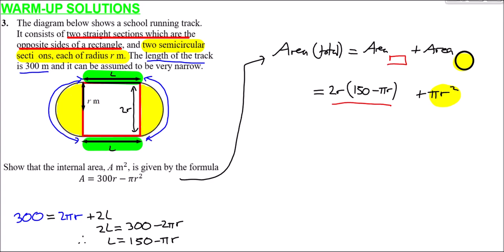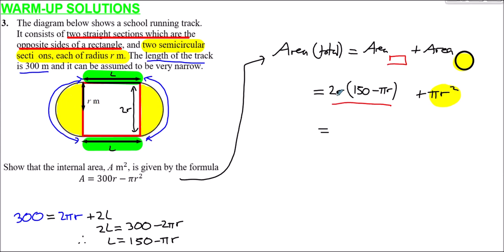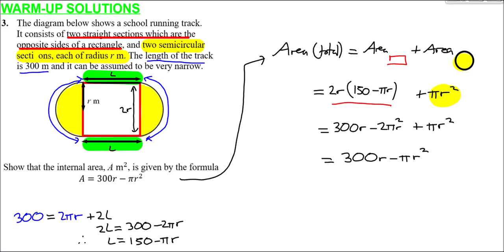Adding the area of the two semicircles (which equals πr²): total area = 300r − 2πr² + πr² = 300r − πr². This is indeed the target formula, so we have fulfilled what was required for question 3.